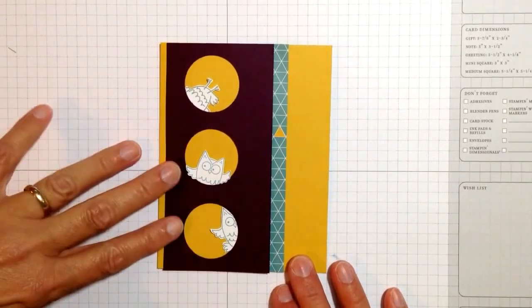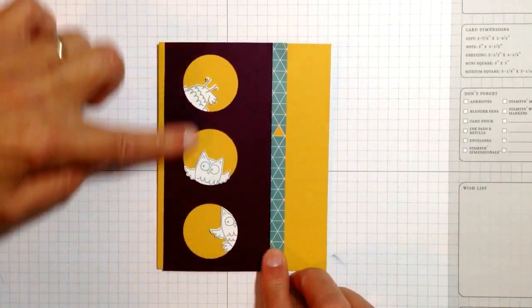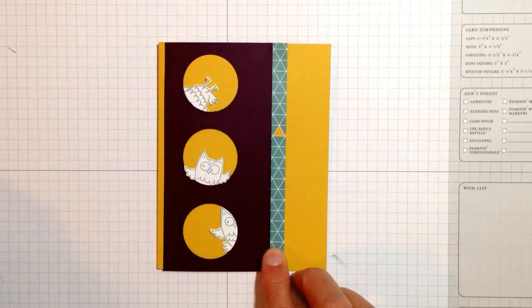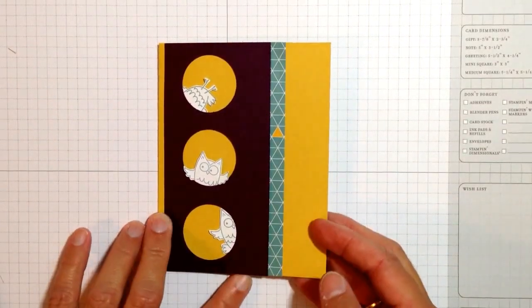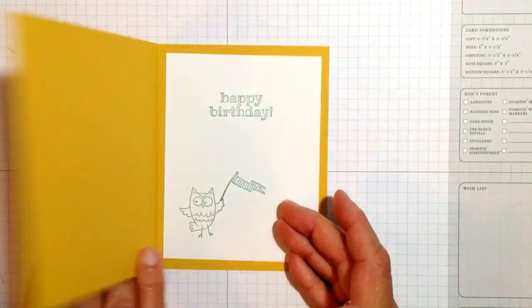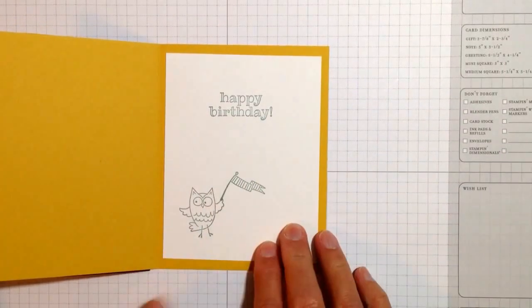Karen Titus here, and today we're doing this fun little peephole card where the little owl from So Very Happy is peeking out the windows in different ways. On the inside we have the happy birthday and the rest of it.